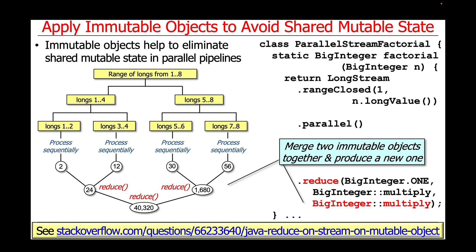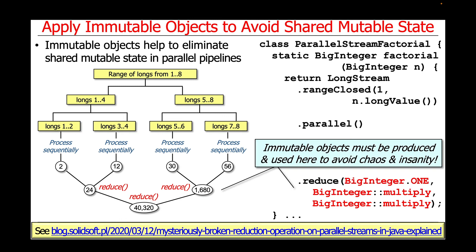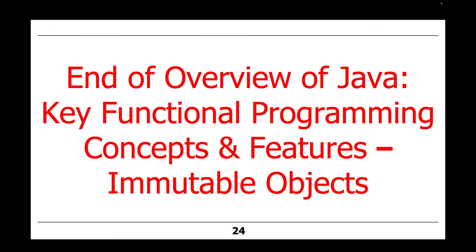In this case, we're using immutable objects to create new immutable objects. It's very important that immutable objects be produced and used in this process in order to avoid chaos and insanity. You can read more about the types of problems that occur by taking a look at the link at the bottom of the slide.